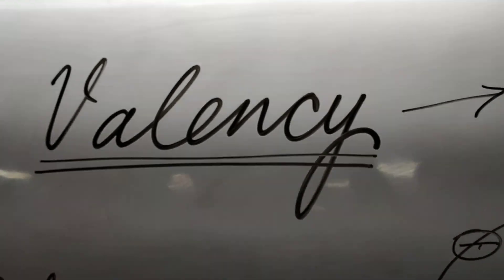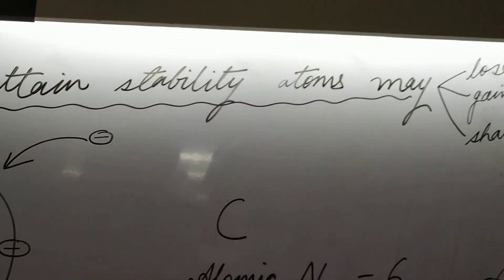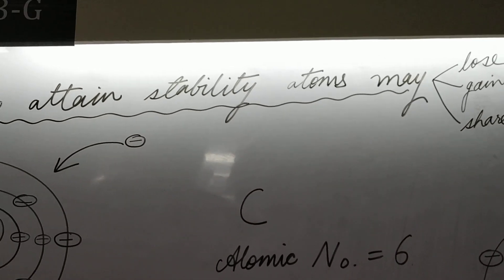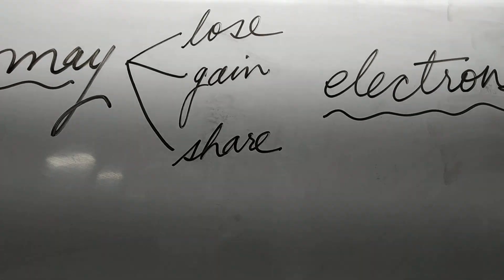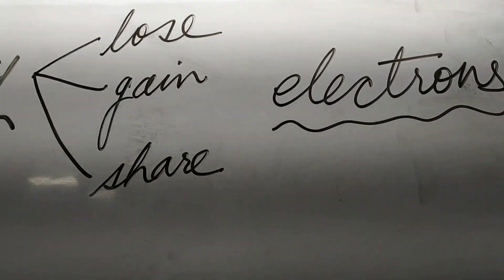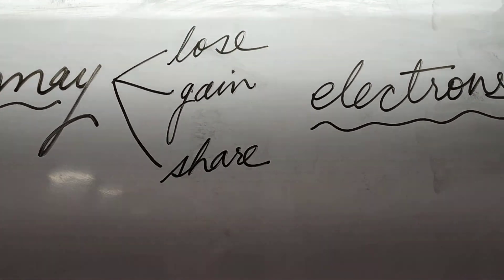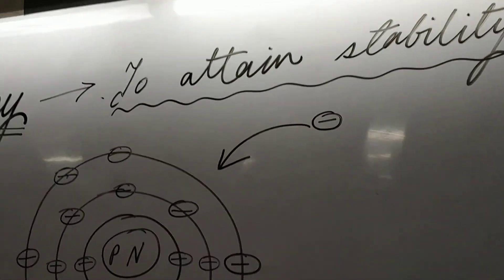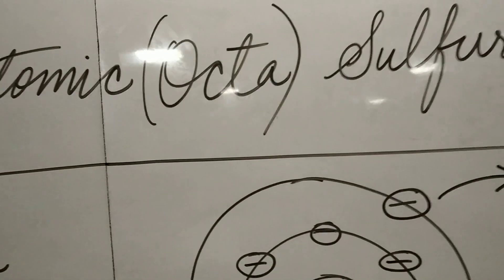Now, the next topic: valency. Every atom tries to attain stability. And in the process of attaining stability, it may lose or gain or share electrons. The number of electrons it loses or gains or shares is known as the valency of that particular atom. Let us take examples to exemplify it better.